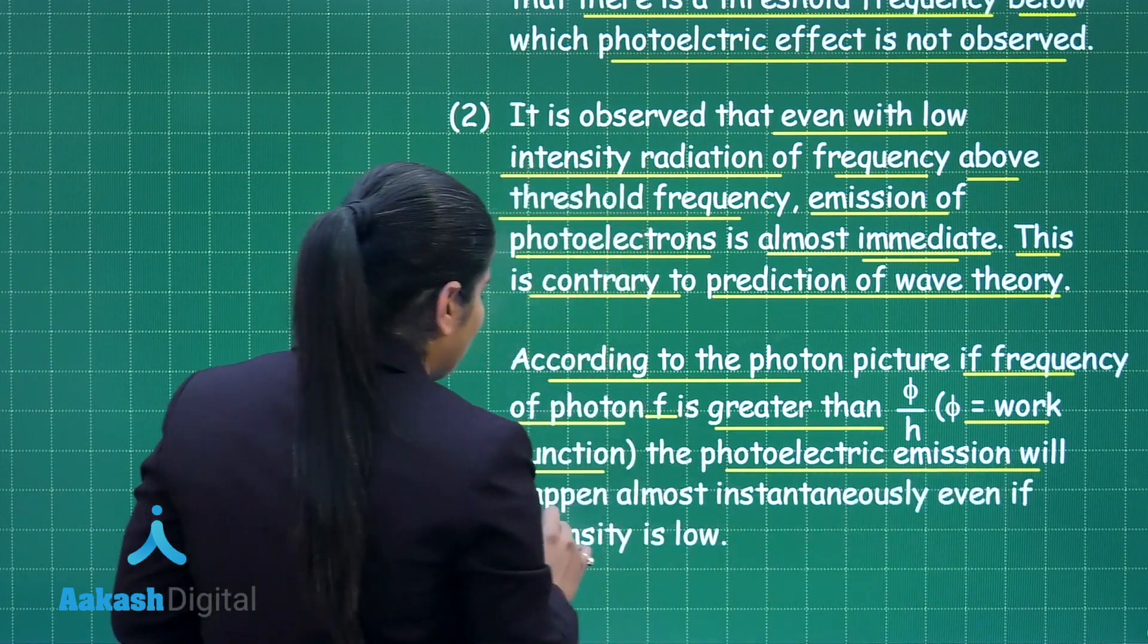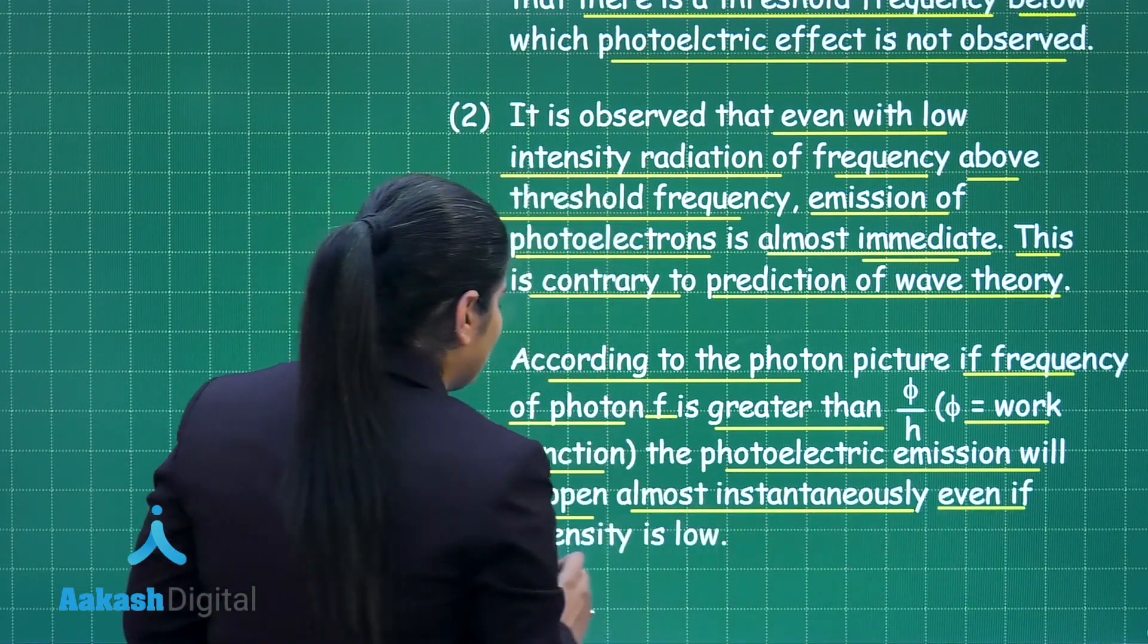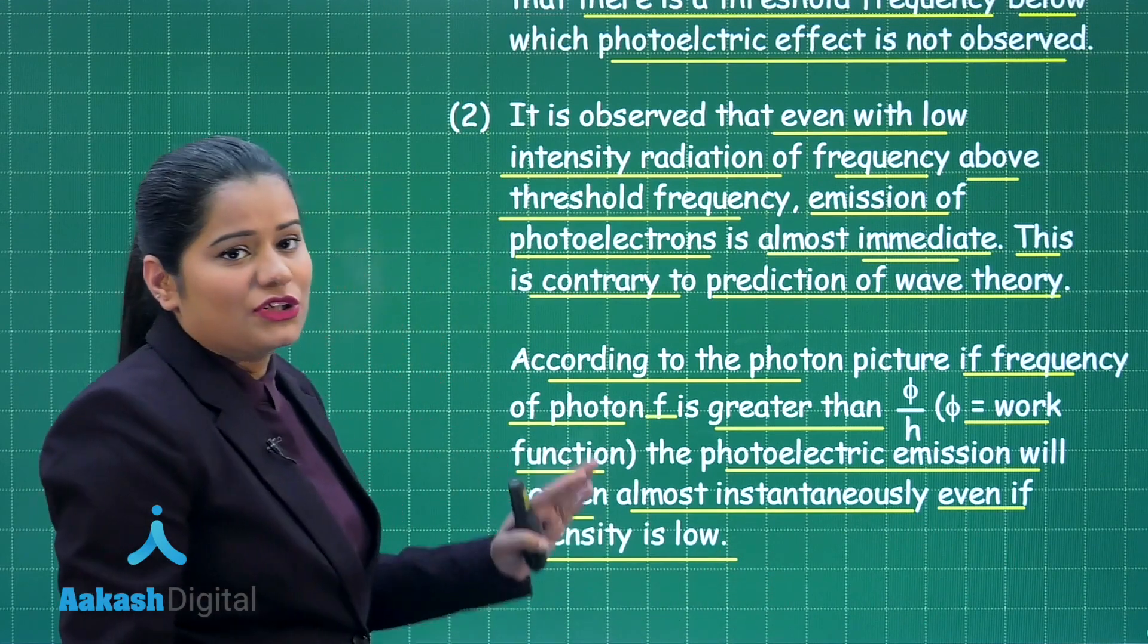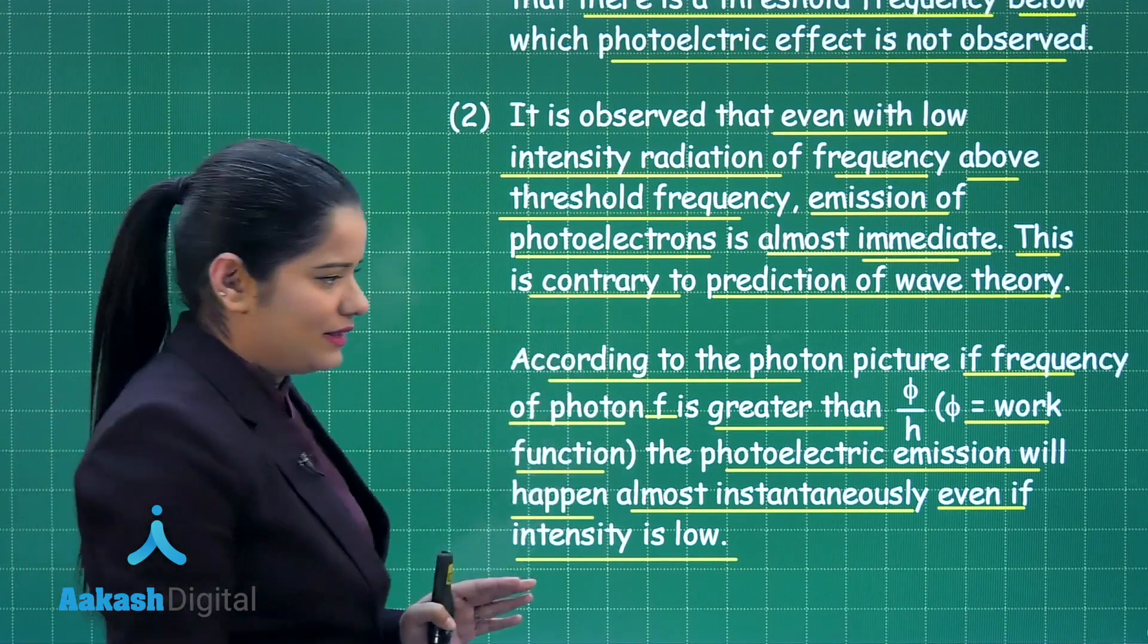the photoelectric emission will happen almost instantaneously even if the intensity is low. This is how the photon picture explained the photoelectric effect.